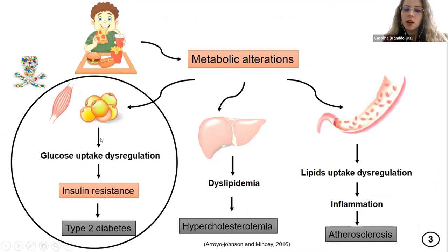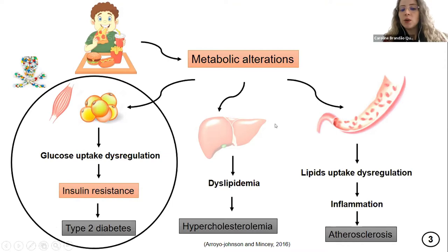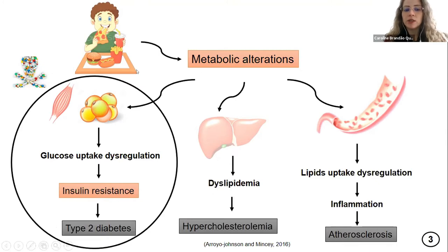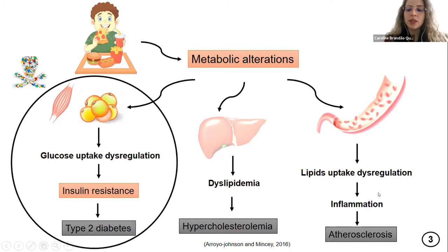This dysregulation could favor the development of an insulin-resistant state and also favor the development of type 2 diabetes. For example, in the liver we have a dyslipidemic state because we have an increase in cholesterol synthesis. All these metabolic alterations in these main peripheral tissues could compromise lipid uptake in the blood and also favor an inflammatory state and the development of atherosclerosis.